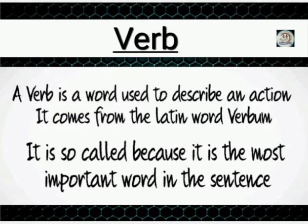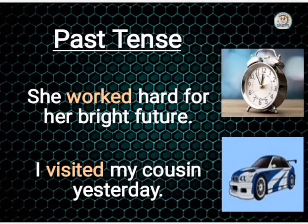Verb ایک word ہے جو کسی کام کے ہونے کو ظاہر کرتا ہے — کوئی کام ہوا تو کیسے ہوا۔ Verb sentence میں بہت important word ہوتا ہے کیونکہ verb tense میں کسی کام کے ہونے کو ظاہر کرتا ہے۔ Past tense کا مطلب ہے ایسا tense جس میں ماضی کا ذکر کیا گیا ہو — گزرے ہوئے وقت کا ذکر کیا گیا ہو۔